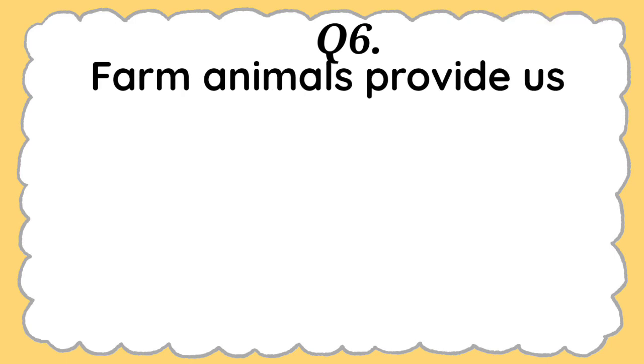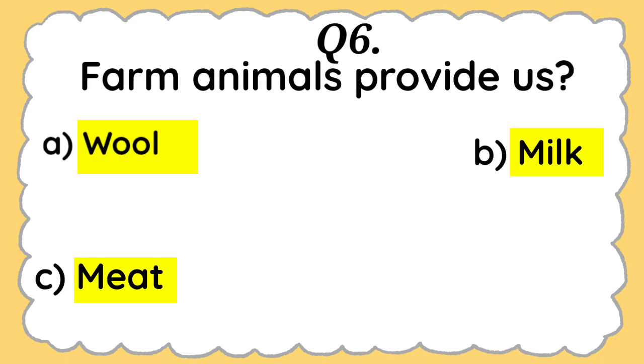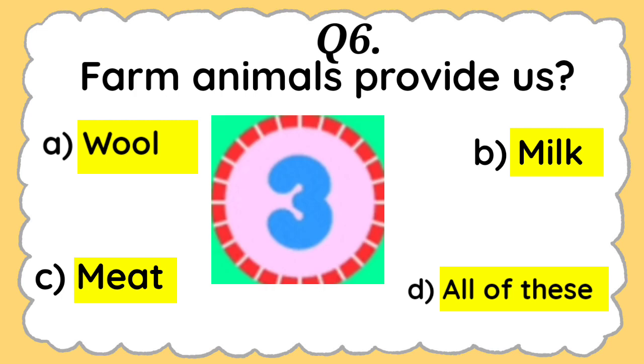Question 6: Farm animals provide us wool, milk, meat, or all of these. And the answer is all of these.